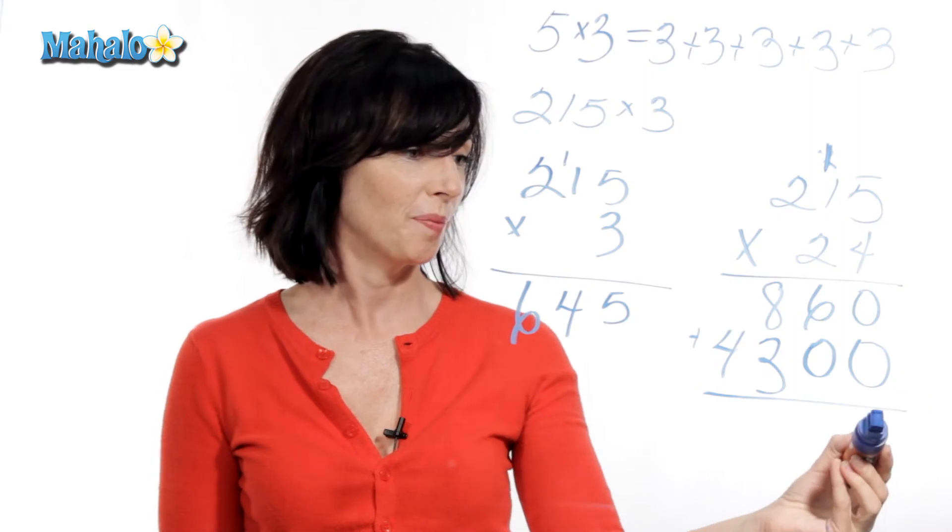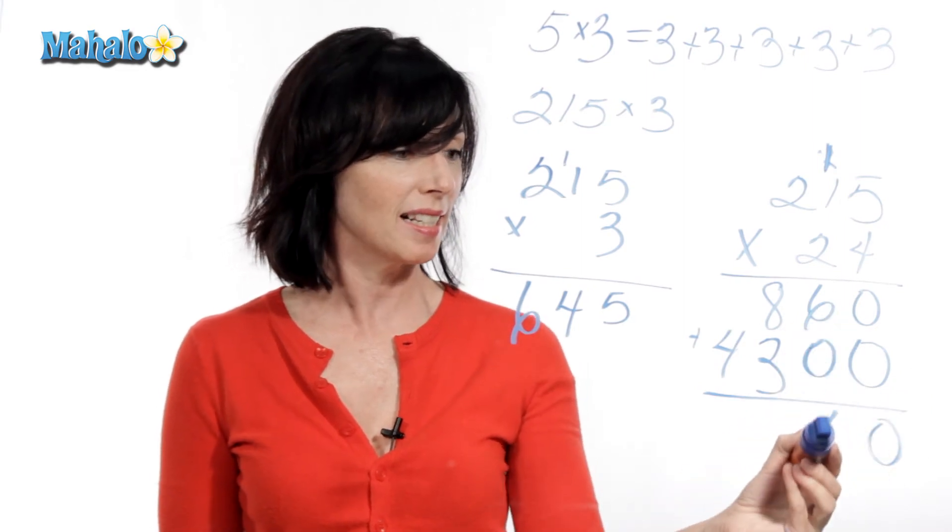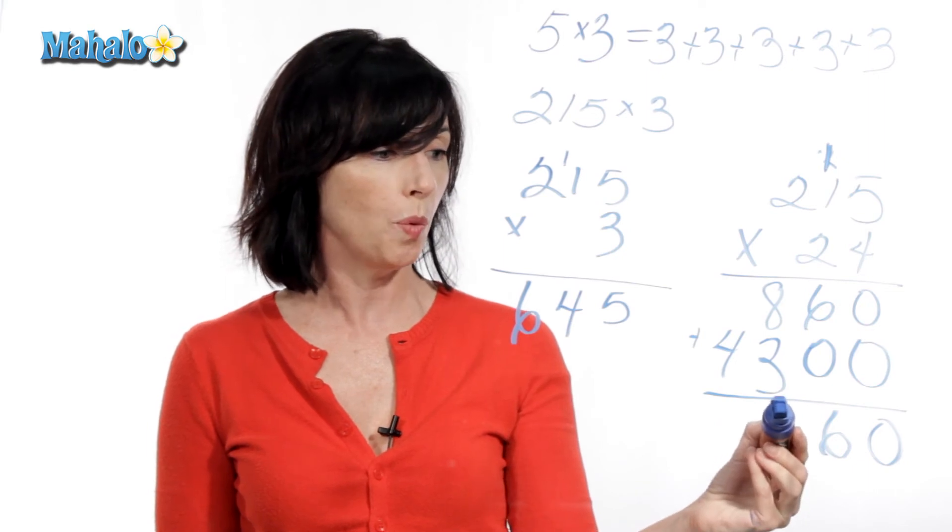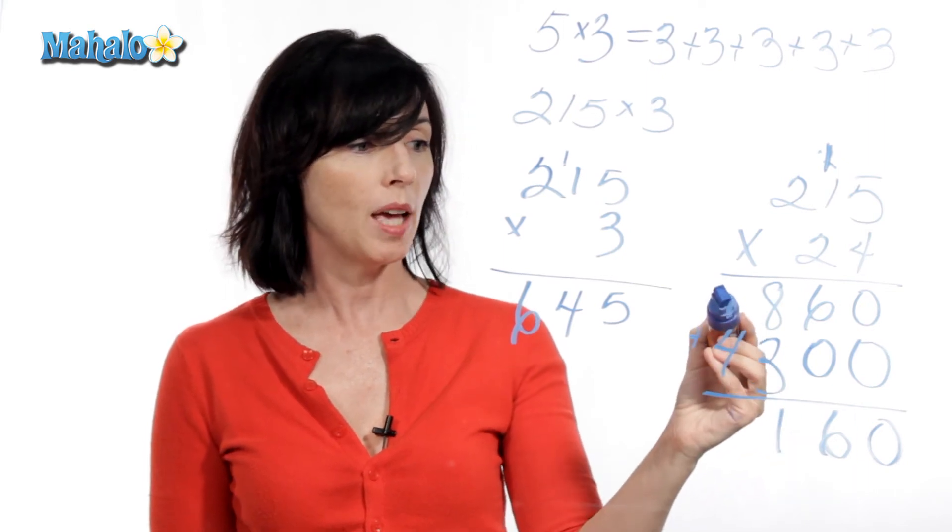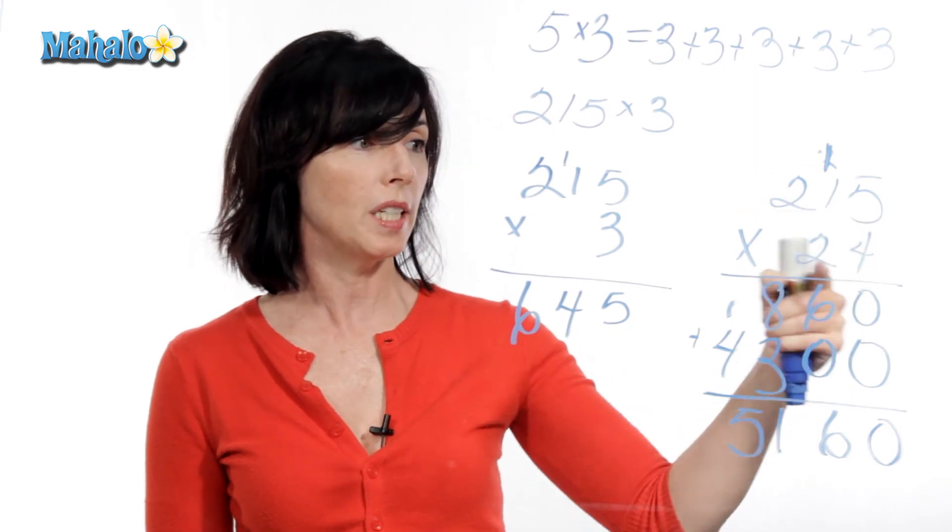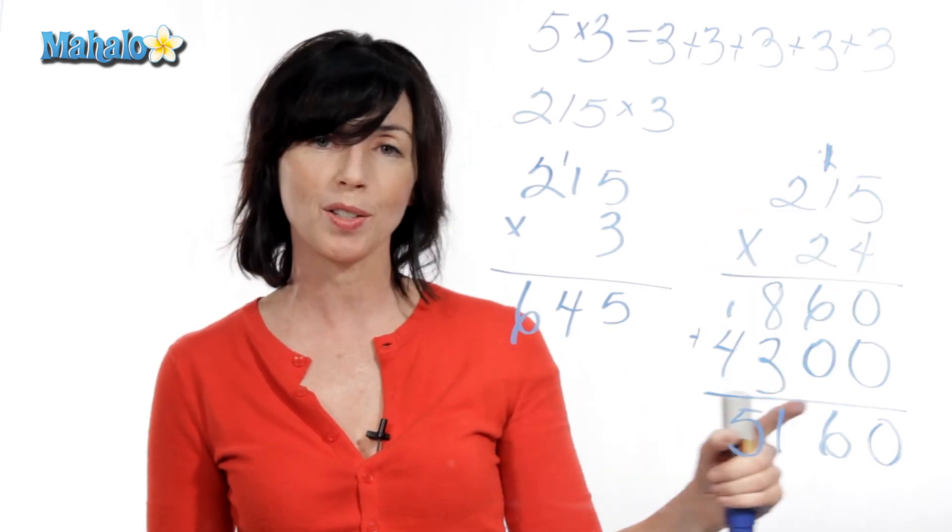Zero plus zero is zero, six plus zero is six, eight plus three is 11. So I put down a one, and I carry the one, and one plus four is five. So 215 times 24 is equal to 5,160.